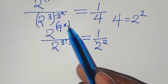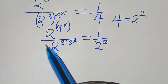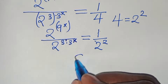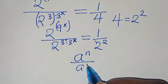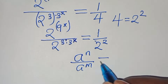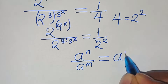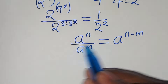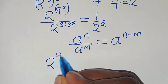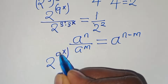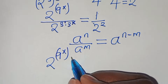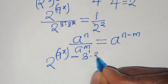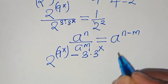The next step: 2 to the power of 9 raised to the power of x, divided by 2 to the power of 3 to the power of 1 times 3 to the power of x. This is in the form of a to the power of n divided by a to the power of m, which we can express as a to the power of n minus m. So this implies we have 2 to the power of 9 raised to the power of x, subtract 3 to the power of 1 multiplied by 3 to the power of x.